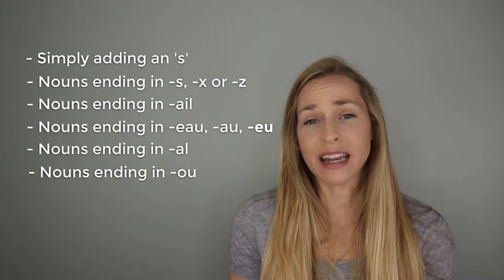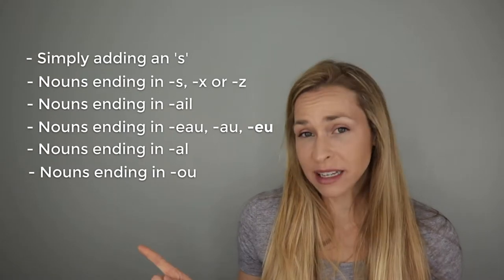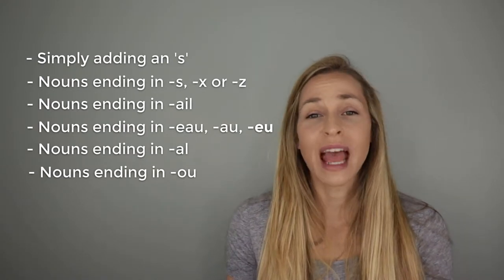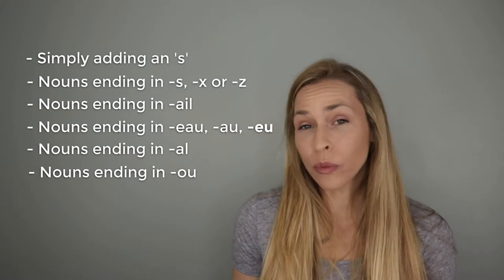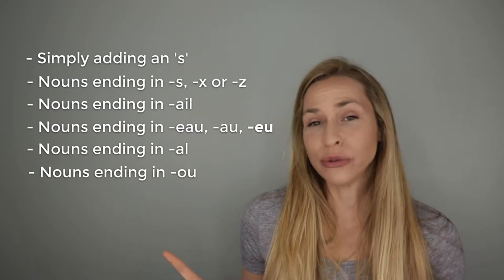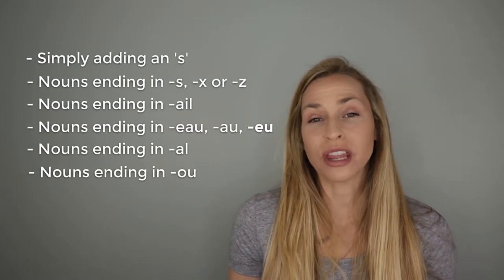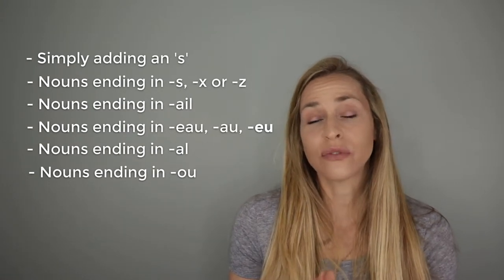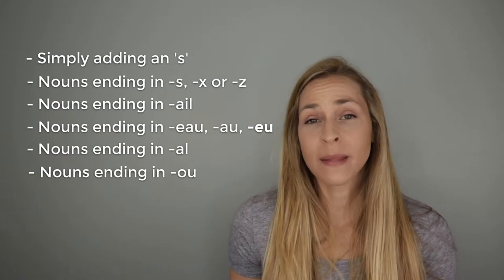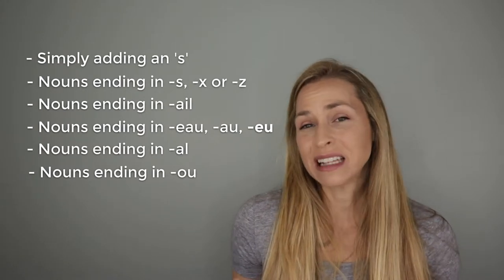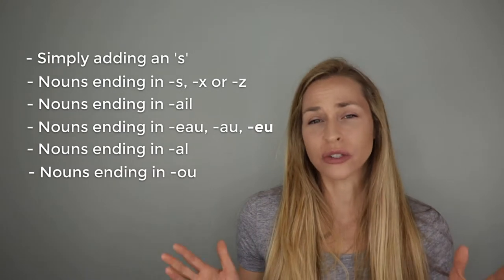Then we're going to go over nouns that end in S, X, or Z, and then nouns that end in AU, EAU, or EU, and then nouns that finish with AL, and finally nouns that finish in OU. We're going to go over all these endings because they have variations in how we form the plural, and some of them have exceptions that are important to recognize and remember.